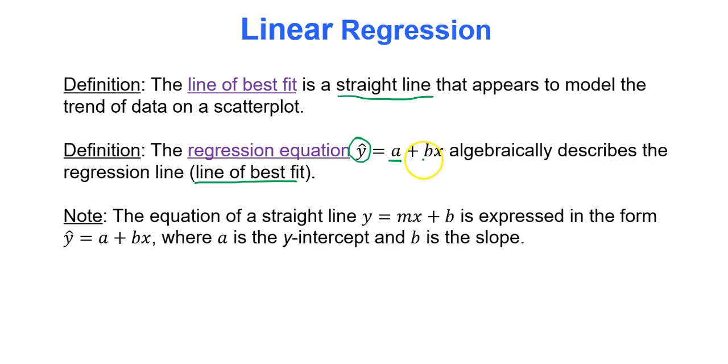It equals some number a plus b times some value x. So a and b will be obtained from our Google Sheets document, x and y hat will stay as they are. You plug in a value for x, out comes a value for y. The equation of a straight line, y equals mx plus b, is very similar to the linear regression line equation. a is referred to as the y intercept and b is referred to as the slope in our linear regression equation.